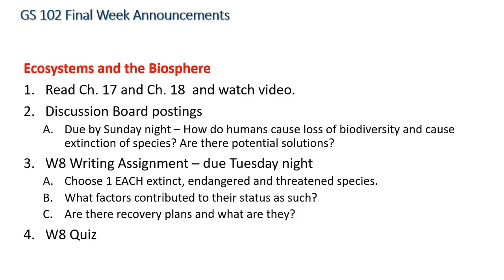Then you have the Week 8 Writing Assignment, which is due by Tuesday night. In the weekly content, you have three different websites listed under the writing assignment that will help you find lists of these different species, so go to that and take a look. You need to choose one each of these different species: one extinct species, one endangered species, and one threatened species. You need to list these, and then you need to include a discussion of what factors contributed to their status.